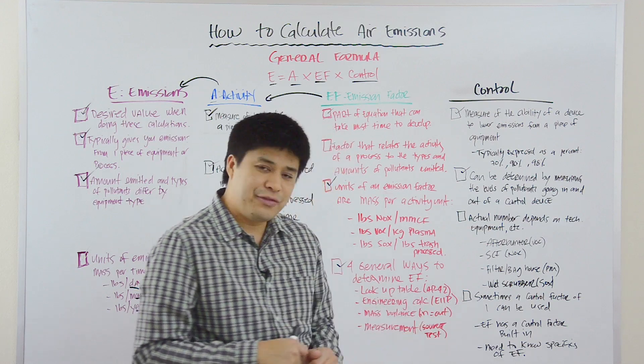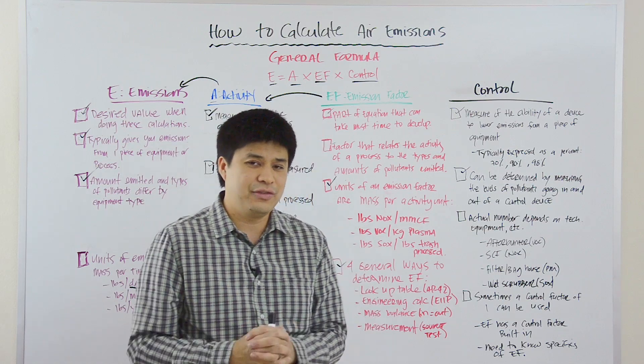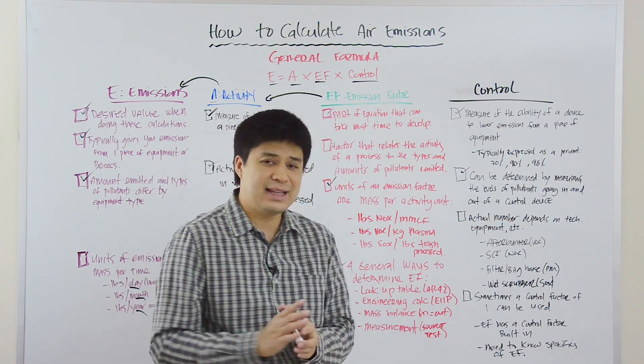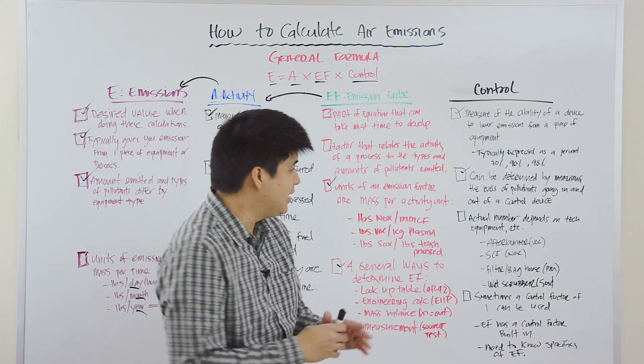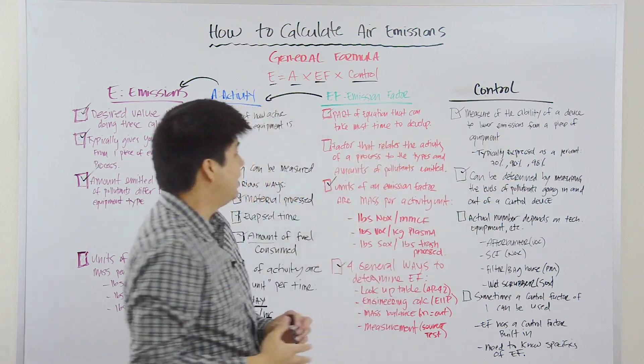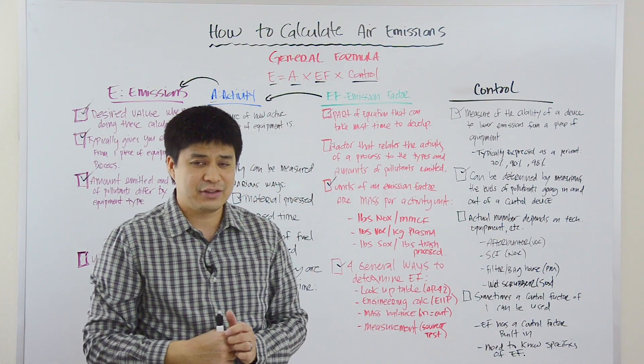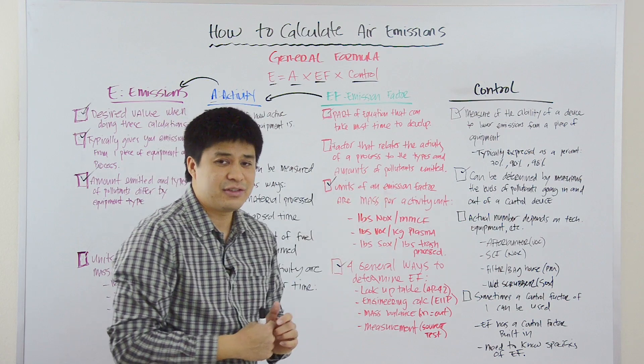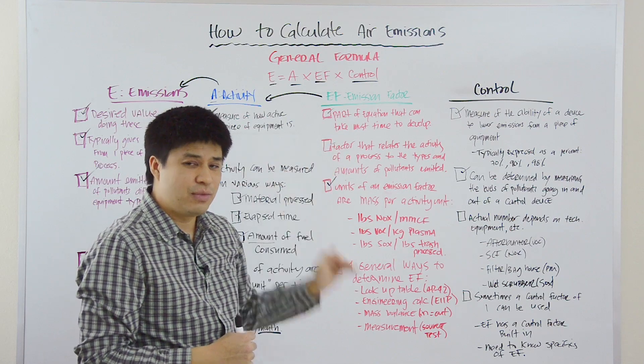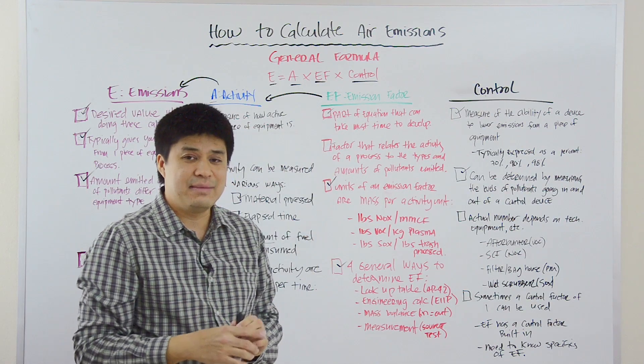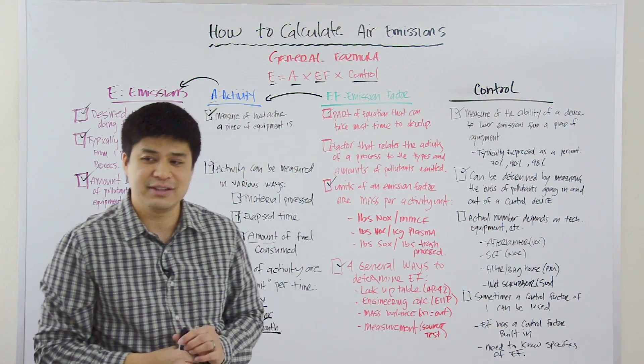Now, sometimes a control factor of one can be used. And we see that quite often. And when you have a control factor of one, that really means that there is no control, but then the emission factor is a controlled emission factor. And so, the numbers, the control value and the emission factor are kind of grouped together. Now, in order to know if you can use a controlling factor of one, it's important to understand your emission factor and sort of the history of that emission factor, what were all the details that went into deriving that emission factor, and if indeed that emission factor is a controlled value or not. And so, you really need to know the specifics about your emission factor.